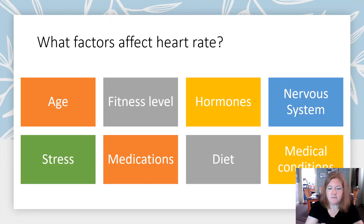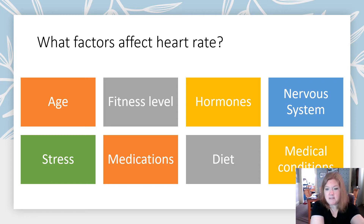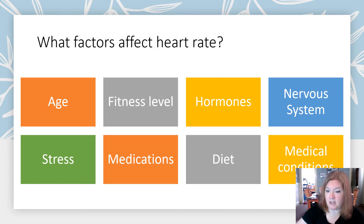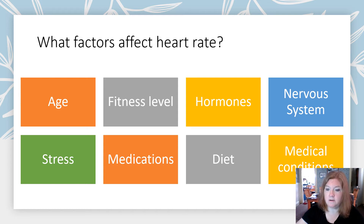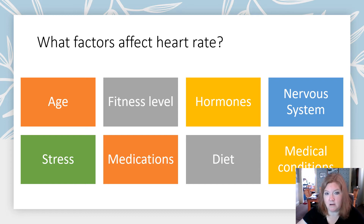What are some factors that affect heart rate? We talked about age — newborns have a very fast heart rate. Fitness level — athletes have a lower heart rate. Hormones and the nervous system: the sympathetic increases heart rate, the parasympathetic decreases it, through the release of hormones. Stress, medications, diet, and medical conditions can all affect your heart rate.